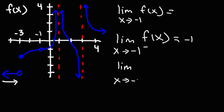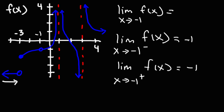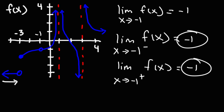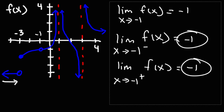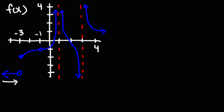Now what about approaching negative 1 from the right side? As we follow the curve towards an x value of negative 1 from the right side, we still get the same y value of negative 1. So the left-sided limit and the right-sided limit equal the same thing. Therefore the limit exists and it's equal to negative 1. That's how you can tell if a limit exists — by checking the one-sided limits to see if they match.